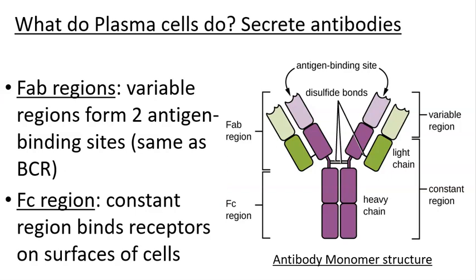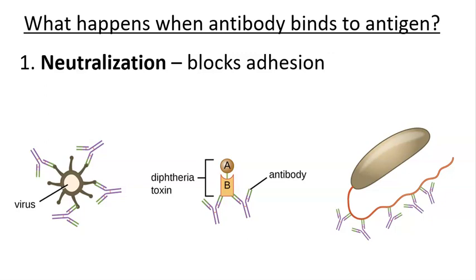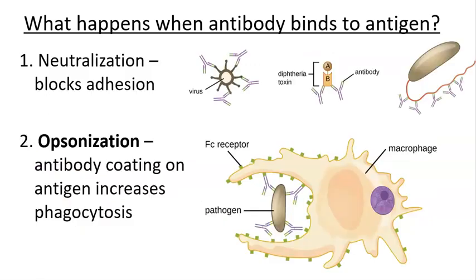When antibodies bind to foreign molecules or antigens, one key function is neutralization. For example, a virus uses spike proteins to attach to your cells; if an antibody binds to those spikes, it blocks the virus from attaching and prevents infection. Antibodies can also bind to specific epitopes on toxins to neutralize them, or bind to flagella to prevent a pathogen from adhering to host cells.